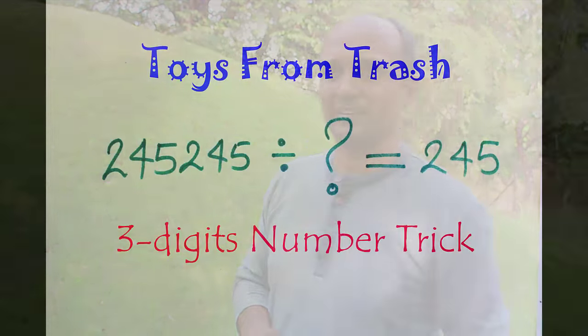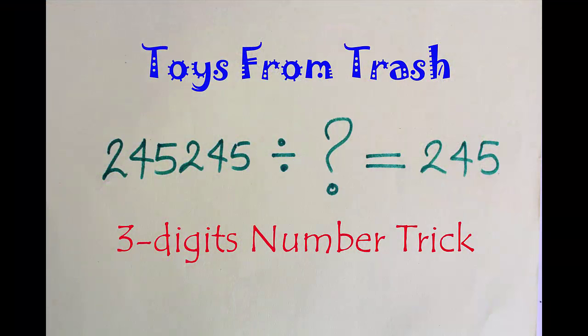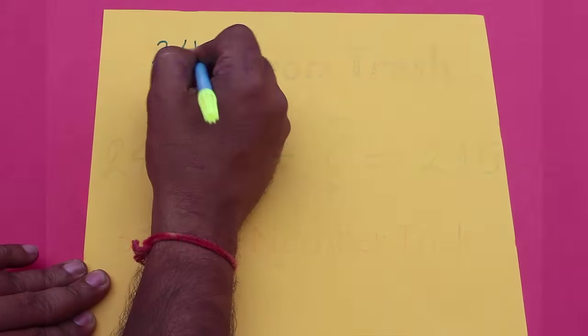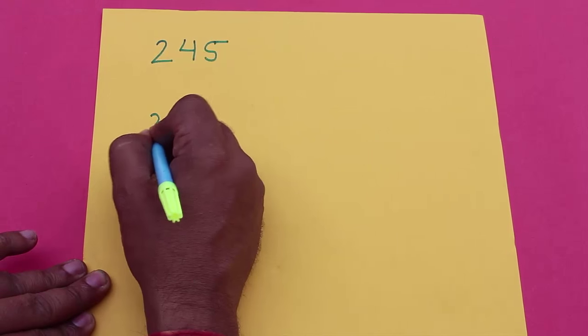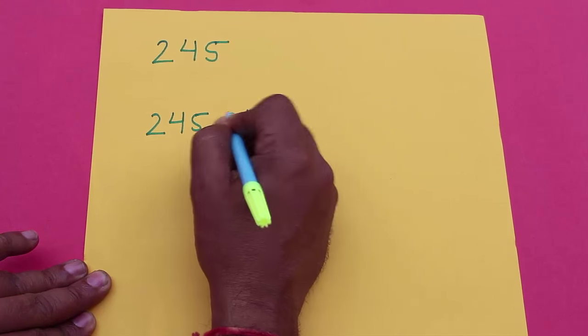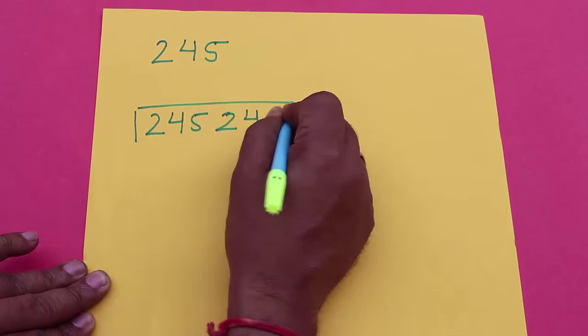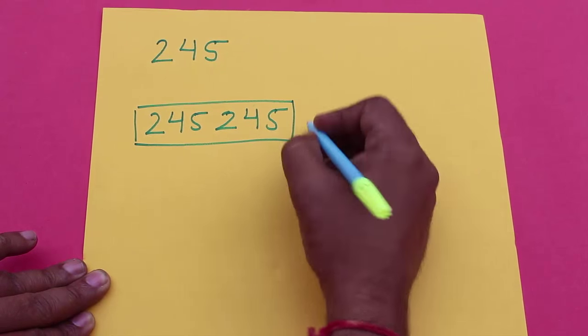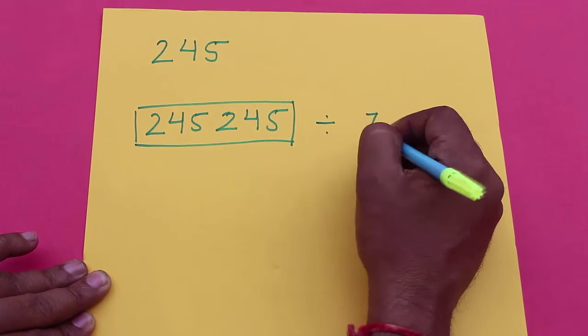You can try this trick with your friends and surprise them. Let's see how it's done. Suppose your friend writes down the number 245. We will write another 245 to make this number 245245. Now we will first divide this number by 7, then 11, and finally by 13.